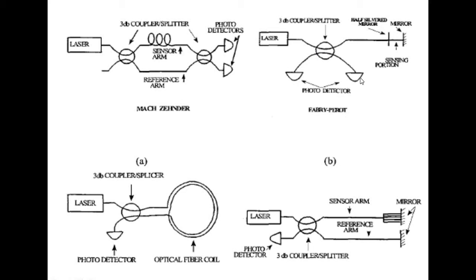Two photo detectors are placed. The first one senses your reference actual signal from the coupler unit. The laser source goes to the photo detector, goes to the mirror, strikes it, and returns. The same cable receives the reflected light source and sends it to another photo diode. The first photo diode measures the reference signal and the other is used for the sensing element.